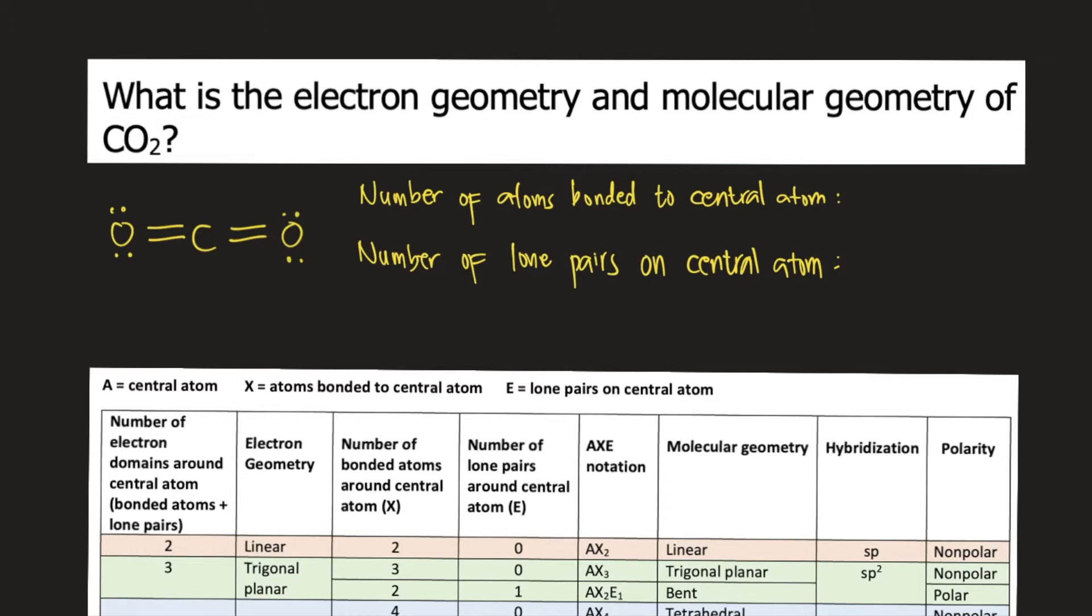The next thing you need to do is count the number of atoms bonded to the central atom and the number of lone pairs on the central atom. As you can see in the Lewis structure,